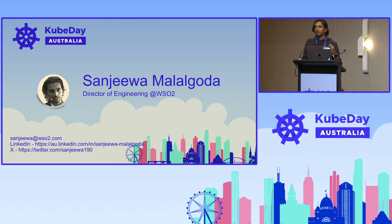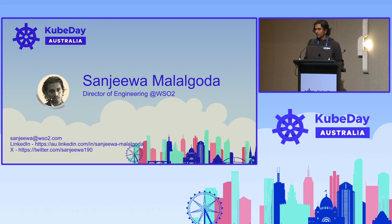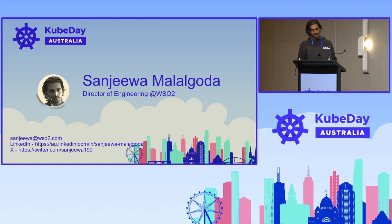When we implemented this solution, we wanted to have a core specification, so we thought of using Gateway API, and for the last two years we used that and did multiple releases. Today in this session, I'll share my own experience about Gateway API, how we use it, and some of the learnings and lessons learned while using it.